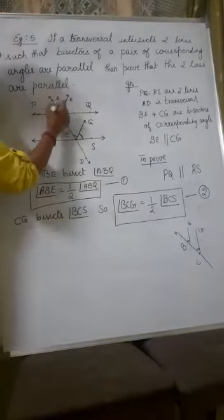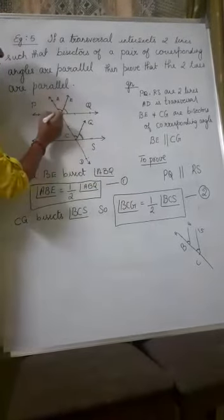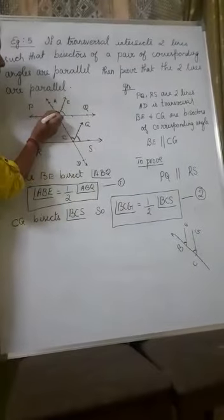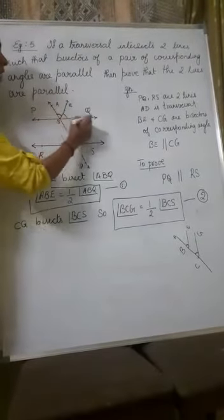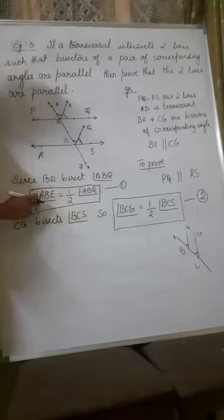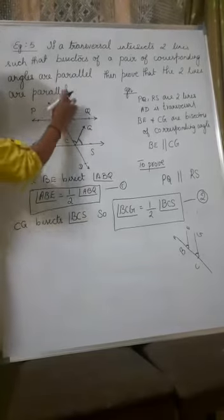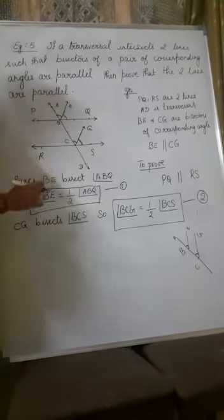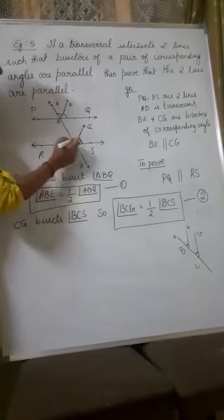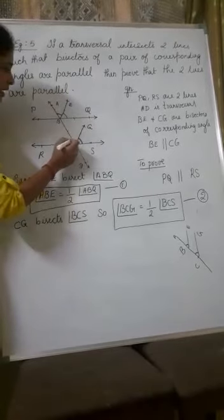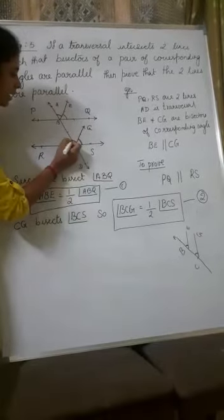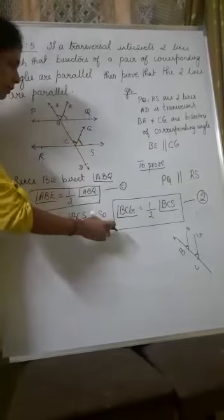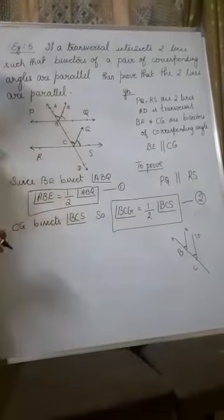Now consider this. Since BE is the angle bisector, this particular angle is half of the entire angle. Angle ABE is half of angle ABQ. Similarly, since CG is the angle bisector, angle BCG is half of angle BCS.